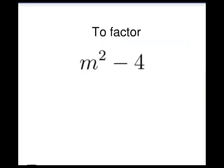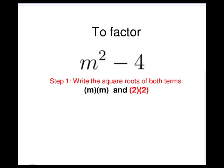To factor m squared minus 4, step 1: write the square roots of both terms. m times m gives us m squared, and 2 times 2 gives us 4.